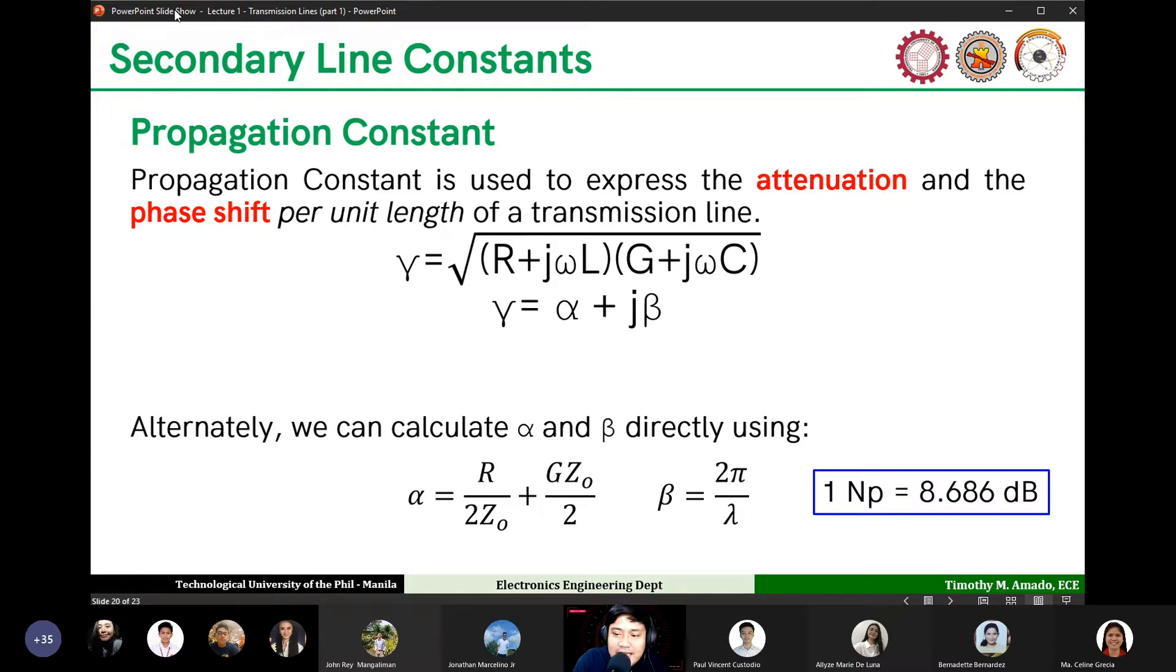Secondary line constants are parameters that dictate the way the signal travels in transmission line. One of the most important things in studying transmission line is the characteristic impedance, which is very important for maximum power transfer.